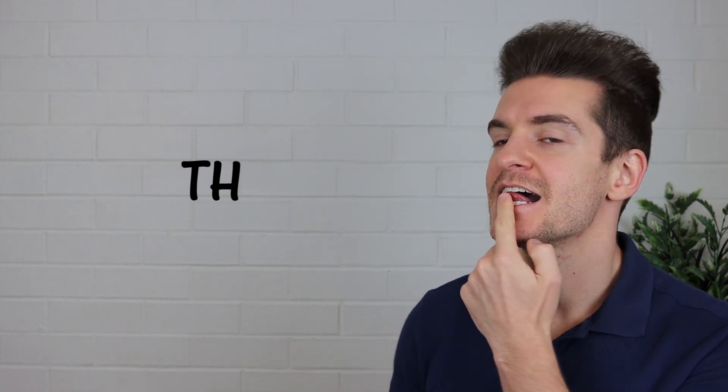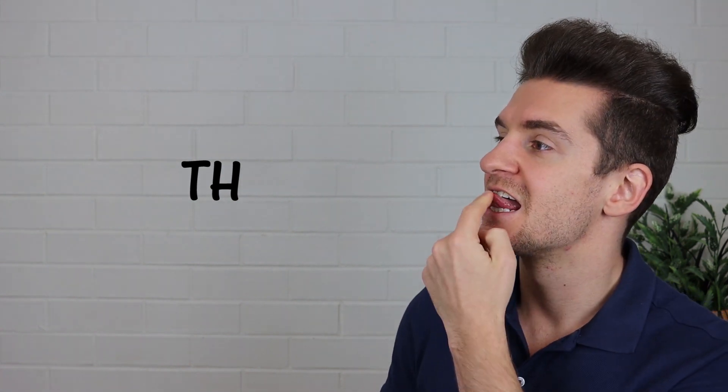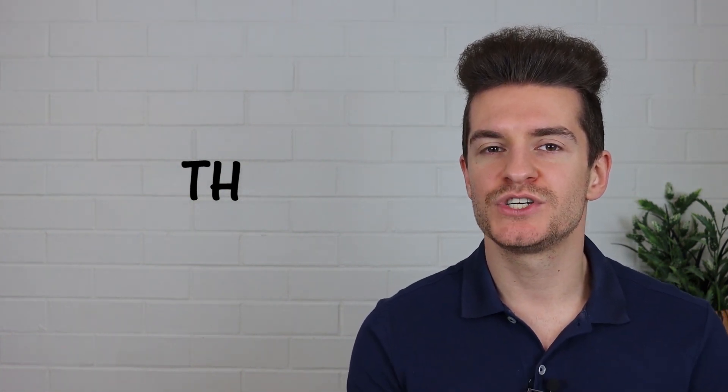Look at this sound here. How do we pronounce it? Many students pronounce it as D, but it is not D. We pronounce this sound like this: F, F. If you look at my tongue, it is here. F, F. This is very important. When you're making the F sound, your tongue has to be touching your top teeth. And when you make the sound, you try and push air out. F, F. Now you try — F, F.